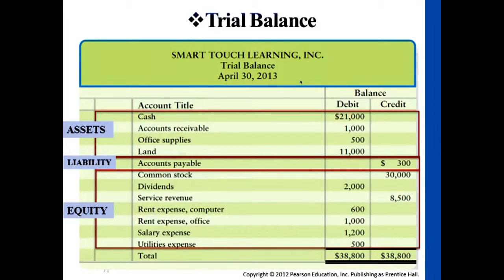Equity is listed based on the sequence discussed in the accounting equation and its elements. We start from externally generated funds, then dividends, service revenue, and all the expenses — followed by internally generated revenues and expenses the company used up. This is the general sequence; you don't need to worry about the detailed account order.